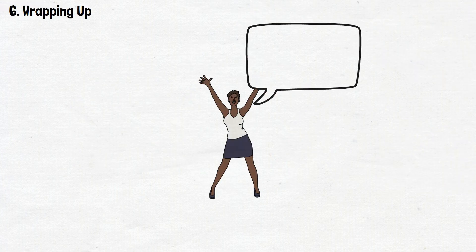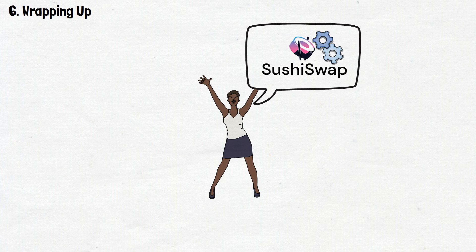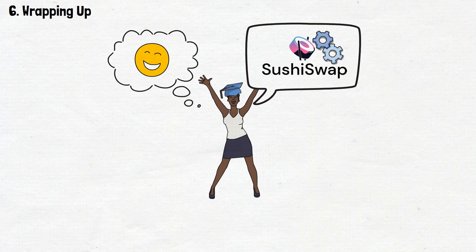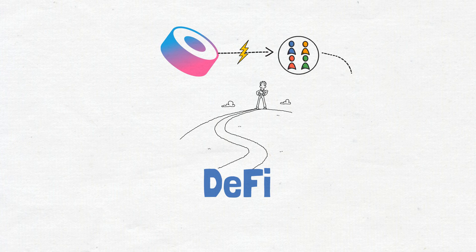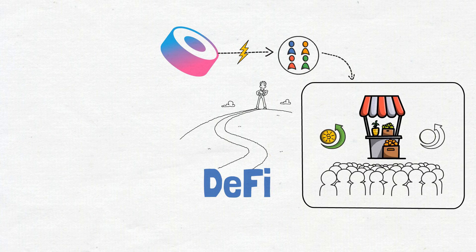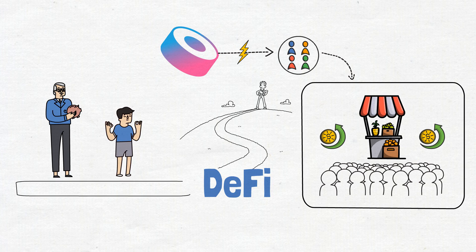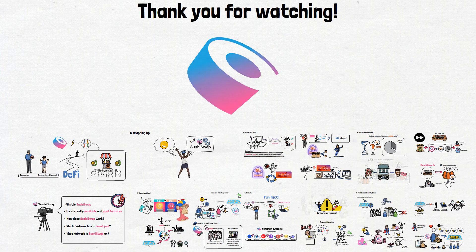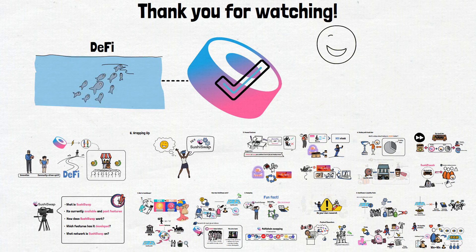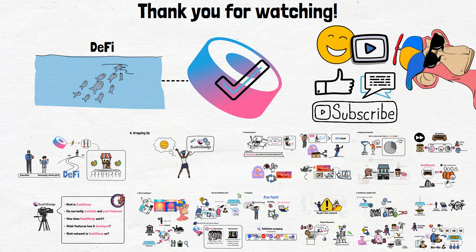And that's it! Today we've taken a comprehensive look into SushiSwap and its features. I hope you've enjoyed the journey and learned a thing or two about this decentralized exchange. As you venture into the DeFi landscape, keep in mind that Sushi is all about empowering the community — whether you're a seasoned crypto enthusiast or just dipping your toes into decentralized waters, SushiSwap offers a unique blend of innovation and community-driven spirit. Thank you for watching! If you liked this animated explainer, make sure to give it a thumbs up, comment, and subscribe to Crypto Finely Explained. See you soon!